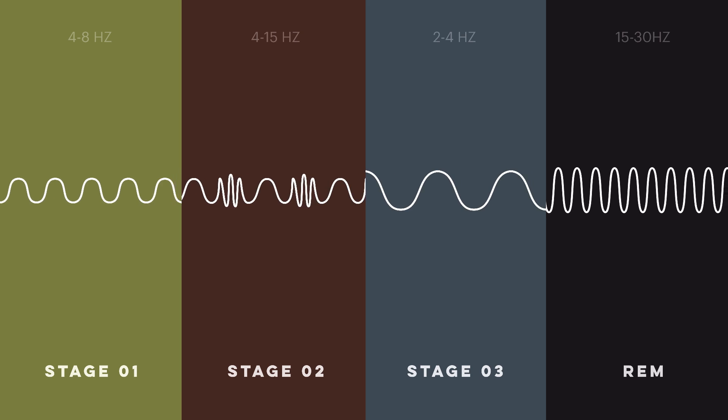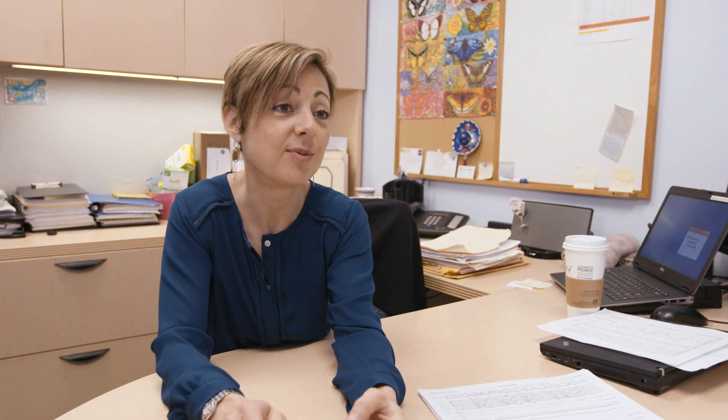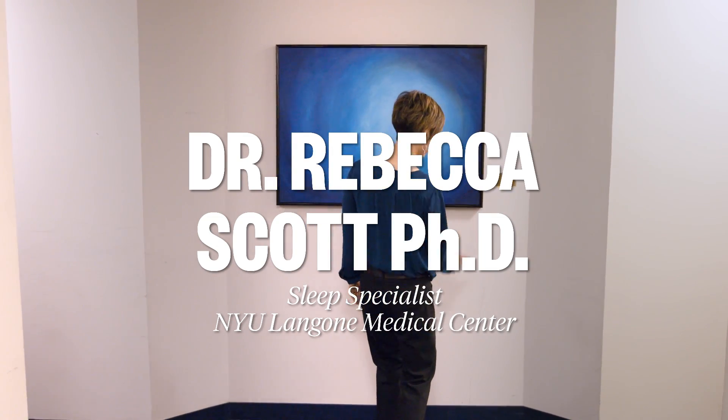Sleep is broken down into four stages. One, two, three, and REM. You repeat each of these stages four to five times over an average eight-hour night. If your brain is organizing your sleep in the right way, you're going to get the deepest sleep right away. Because if you only could sleep four hours, your brain's going to make sure you get that deep sleep.